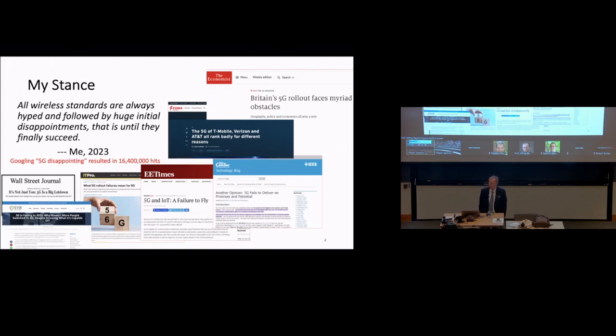As of today, all wireless standards are always hyped and followed by huge initial disappointments until they're finally successful. And certainly you can read many articles. The disappointment of 5G. You probably thought I was going to hype it. Just like everybody else has been. But actually there's been a lot of negative press on 5G as of recently. If you Google 5G disappointing, you'll get over 16 million hits. And it is true that there have been some issues with 5G. One of my points will be that 6G will probably fix 5G, just like 4G fixed 3G and 2G fixed 1G technologies.